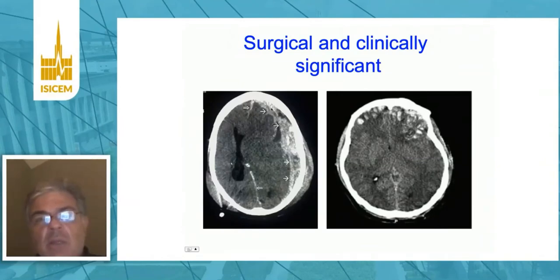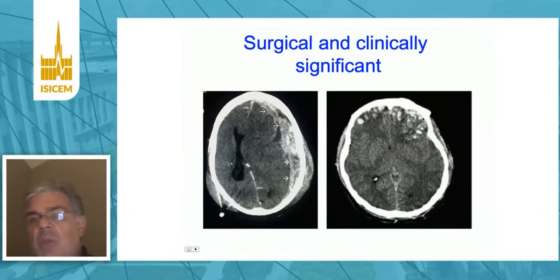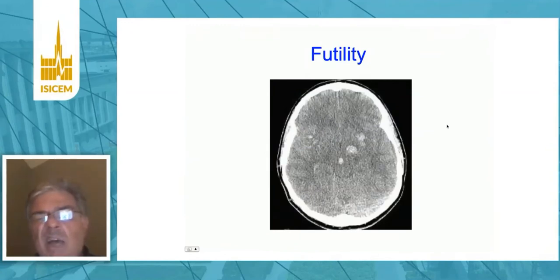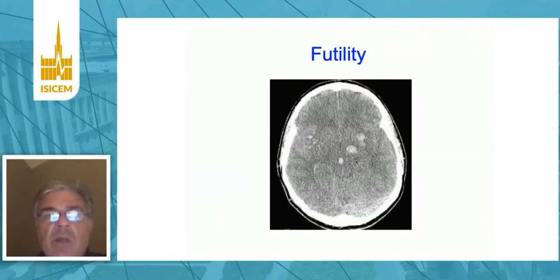Here you can see a very large subdural hematoma with significant mass effect — the ventricles are shifted from left to right. This would be a patient who is a candidate for a craniotomy. On the other hand, you can see the salt-and-pepper effect of bifrontal contusions, which might be a patient who would go on to a decompressive craniectomy. We can also use CT to decide if patients should be treated — in other words, is there futility in the management? This patient has diffuse swelling with multiple contusions including deep white matter, and is likely to have a very poor outcome.